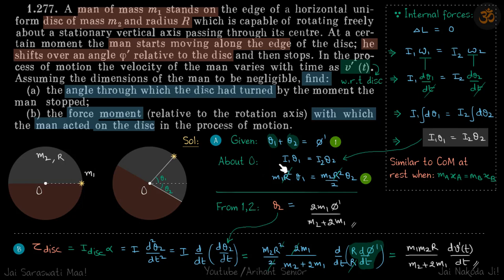About O, i1 theta 1 equals i2 theta 2. i1 for the man is m1 times r squared. m1 r squared theta 1 equals m2 r squared by 2 times theta 2. We have two equations and two variables, theta 1 and theta 2. We need to find the angle through which the disc has turned, which is theta 2, so we solve it and get the answer.